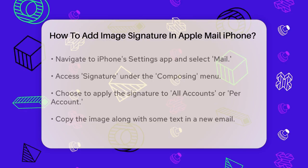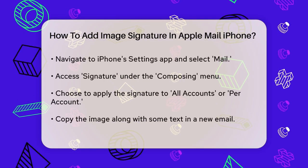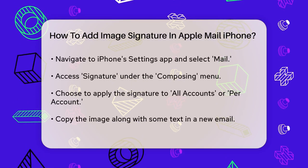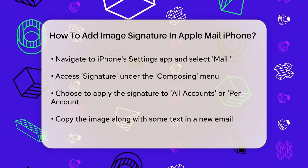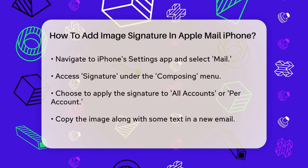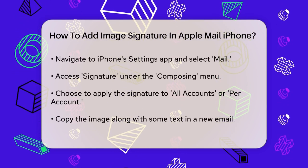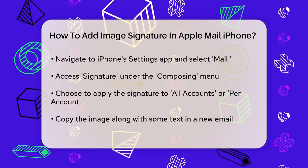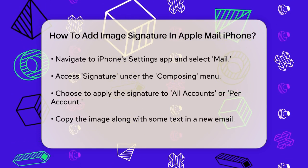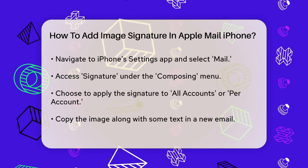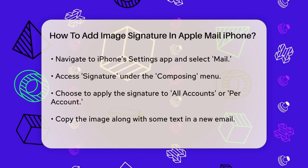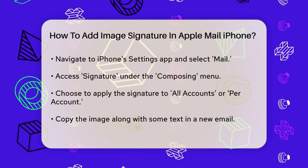Next, go to your iPhone's Settings app, scroll down and tap on Mail. Then scroll down again and tap on Signature under the Composing menu. Here you can choose whether you want to apply the signature to all accounts or per account.